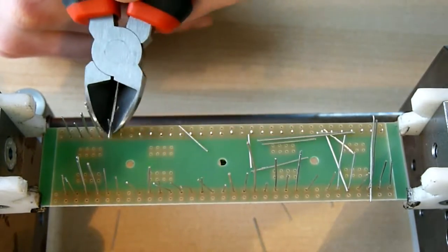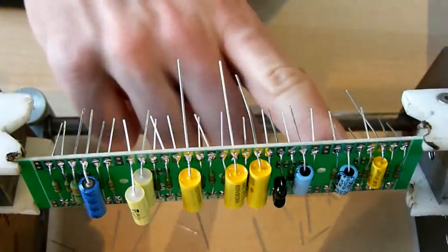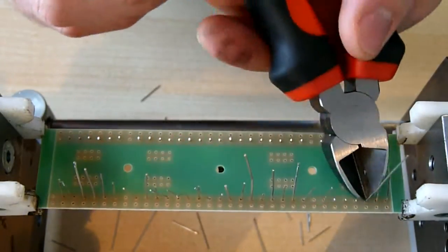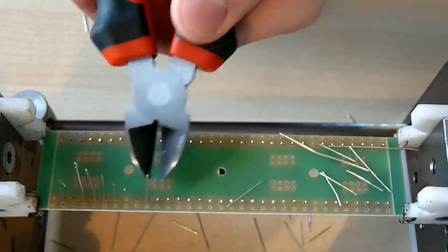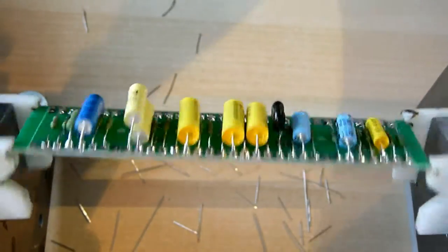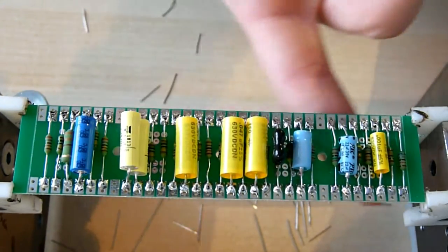After cutting off the legs we are ready with our main board. But keep the legs, you can use them as wire straps afterwards. When you made everything right your board should look like this.